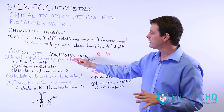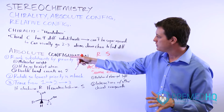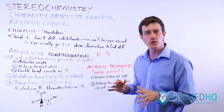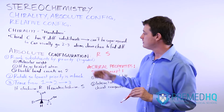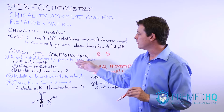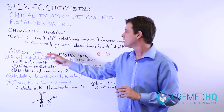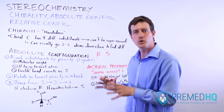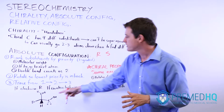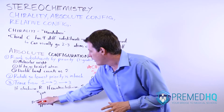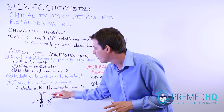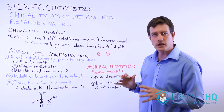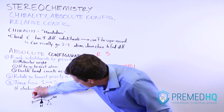To find absolute configuration, the first thing you do is rank the substituents by their priority, with one being the greatest priority. The way you decide what has greater priority is first by looking at molecular weight — whatever atom has the highest molecular weight will be the highest priority. For example, bromine has a higher molecular weight than carbon or hydrogen, so it would be labeled as priority one.